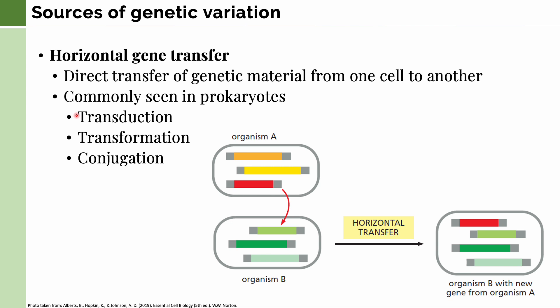In transduction, the genetic material is transferred from one organism to another using viruses. In transformation, genetic information is taken from the environment and directly inserted by the organism into its genome. And finally, in conjugation, two organisms — usually closely related — use appendages called sex pili to transfer genetic sequences from one organism to the other.